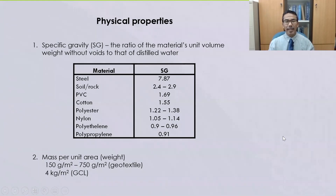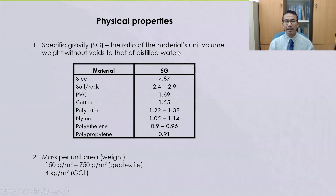Now let's look at some of the physical properties of Geosynthetic materials. In this video I will talk about four physical properties. The first is specific gravity (SG), defined as the ratio of the material's unit volume weight without voids to that of distilled water — in other words, the ratio of the unit weight of the material to the unit weight of water, or the density of the material divided by the density of distilled water.